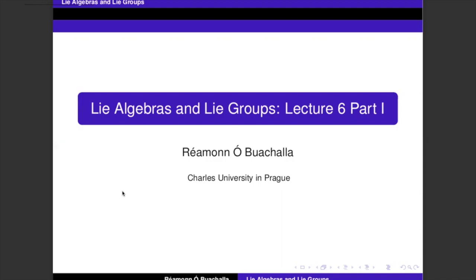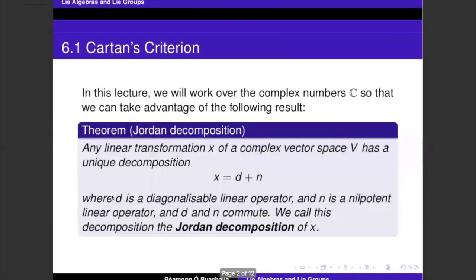Last week we were looking at testing criteria for solvability. It turns out that solvability is quite related to traces. This is Cartan's first criterion. Cartan's second criterion, which deals with semi-simplicity, we do in the next lecture. Now in this lecture we're going to restrict to the complex numbers, because working over different fields leads to very different theories.